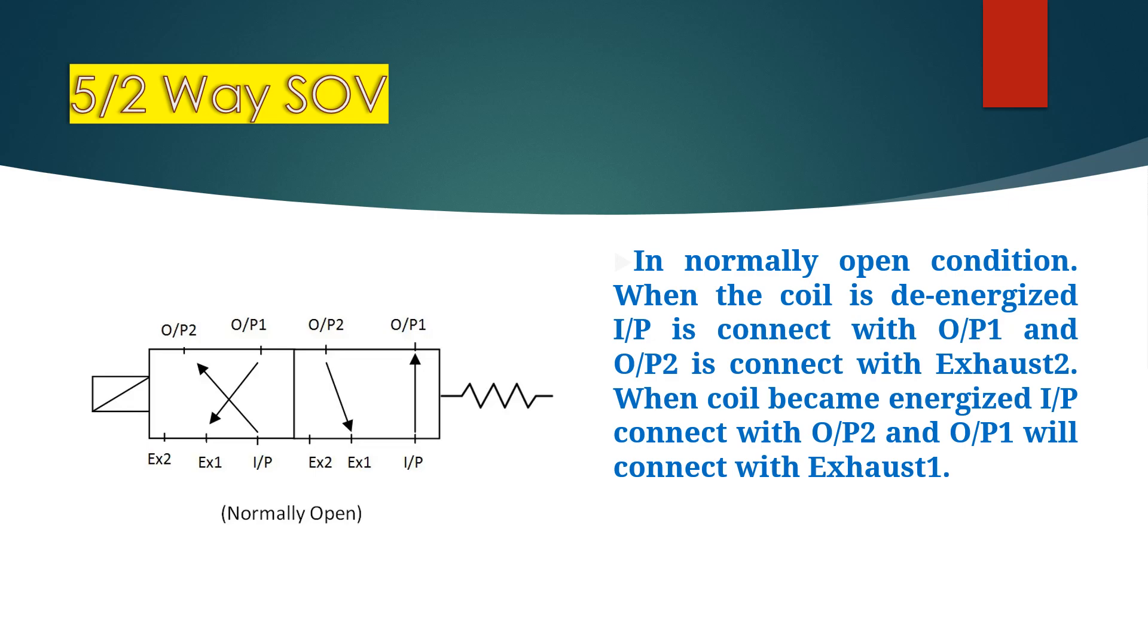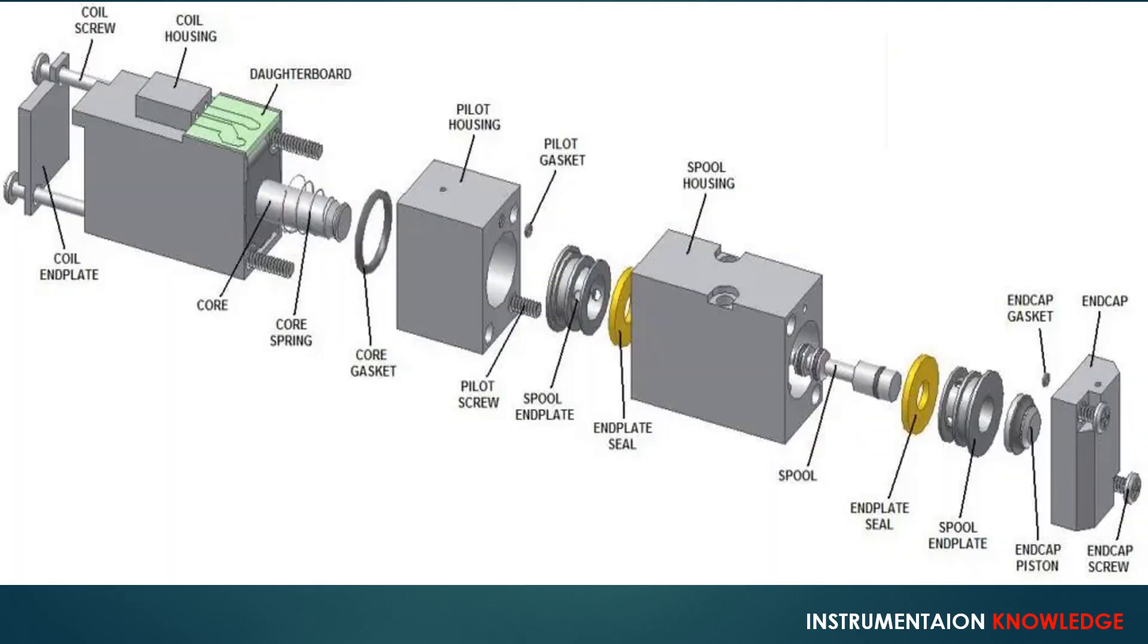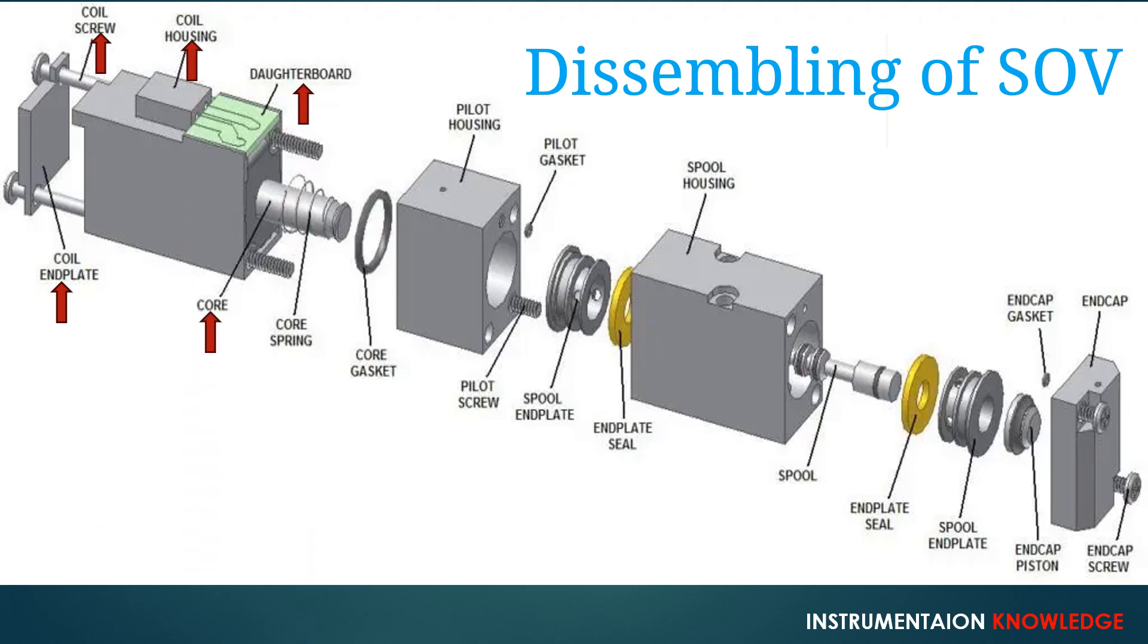So these we have discussed about all types of solenoid valves. Let's see what accessories are being used, that we will see with the assembling of a solenoid valve. See from beginning: coil end plate, coil screw, coil housing, daughter board, core, core spring, core gasket, pilot housing, pilot gasket, pilot screw, spool end plate, spool housing, spool, end plate seal, spool end plate, end cap piston, end cap gasket, end cap, and end cap screw. Accessories may vary for different designs from manufacturers.